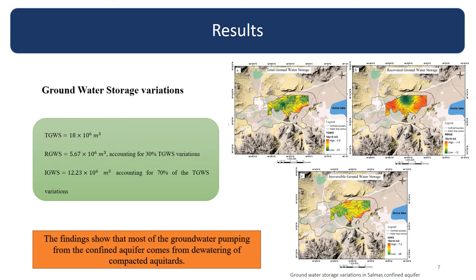The last result is groundwater storage variation. The groundwater storage variation of the confined system is estimated to be 18 million cubic meters over the last three years because of overexploitation from groundwater. It is found that irreversible storage accounts for 70% and recoverable groundwater storage accounts for 30% of total groundwater storage. These findings show that most of the groundwater pumping from the confined aquifer comes from dewatering of compacting aquitards, which is very dangerous for a confined aquifer system and is the main reason for subsidence in this area.